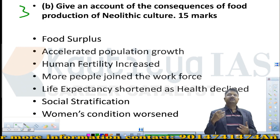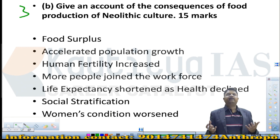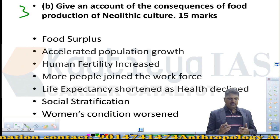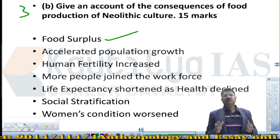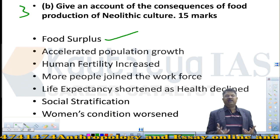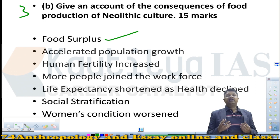Let us see the broad consequences of food production. In the economic dimension, it led to food surplus. Once humans started growing crops on a big scale, they got food surpluses. Food surplus led to accelerated population growth throughout the world. Because of assured food supply, humans could actually lead a better life, and this led to accelerated population growth. Human fertility also increased because of assured food security.